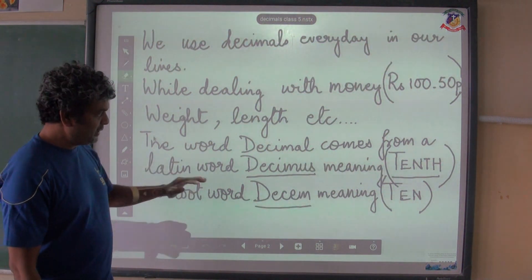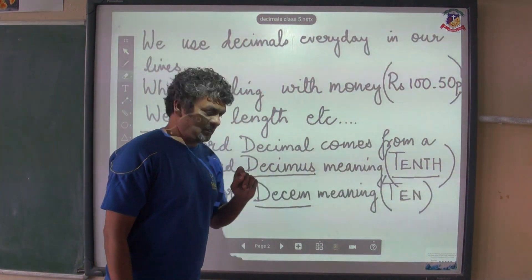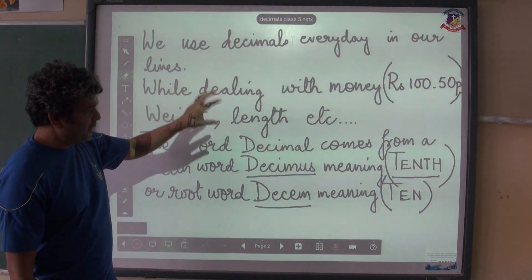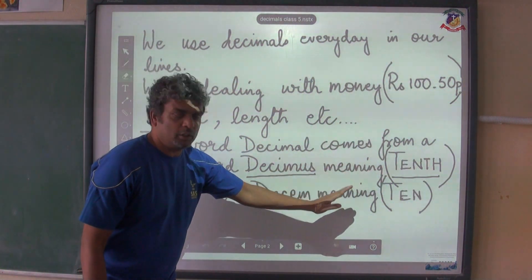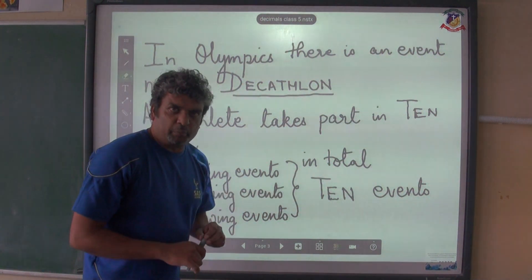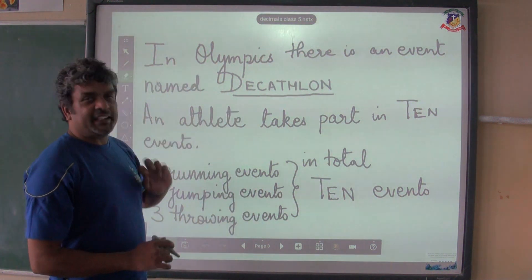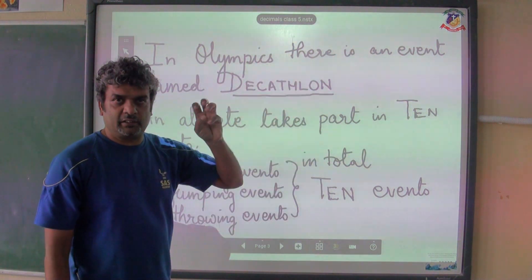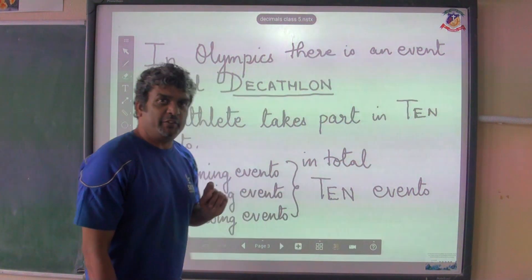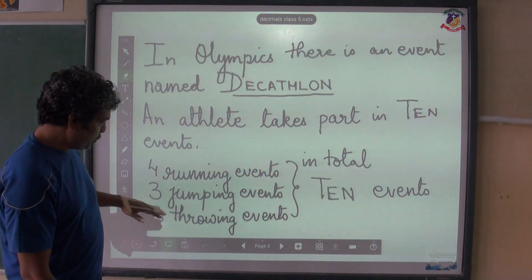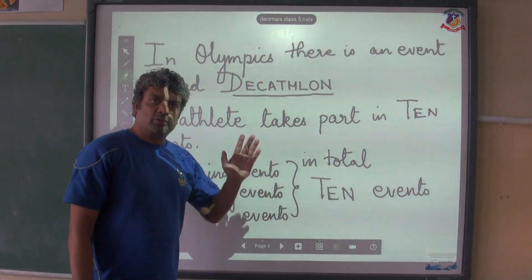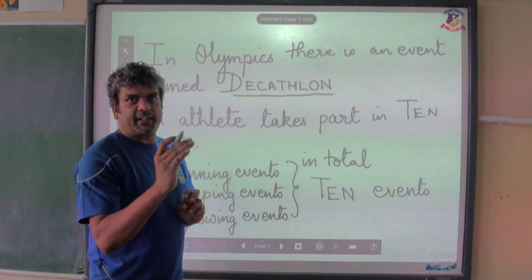The word 'decimal' comes from the Latin word 'decimus,' meaning tenth, or the root word 'decum,' meaning ten. Whenever you see the word decimal, it relates to ten or tenth. You may have seen the decathlon in the Olympics — an athlete takes part in ten events: four running events, three jumping events, and three throwing events, totaling ten. So decimal is associated with ten and tenth.